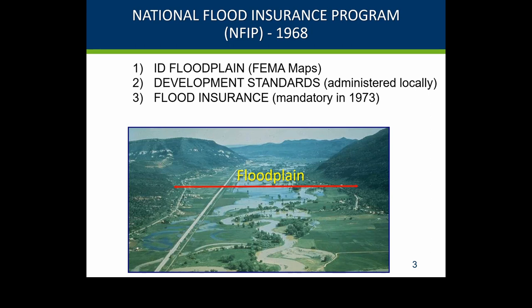The program also involves development standards — guidelines on where and how high you should build. Flood insurance became available nationally, because before that private companies couldn't spread their risk and would fail after widespread floods. About 20-plus years ago, FEMA added mitigation as a major component, including state and local hazard mitigation plans and grants to fund projects that reduce risk.